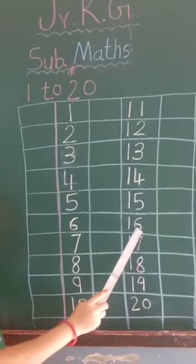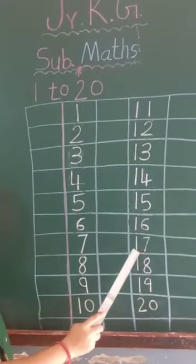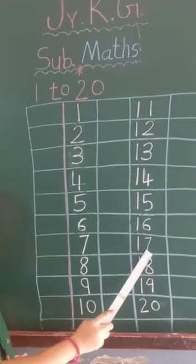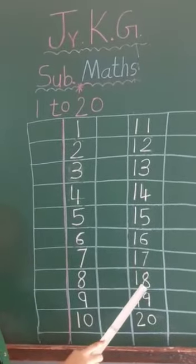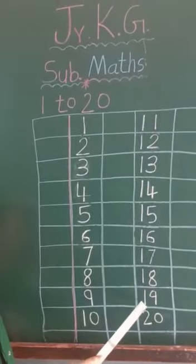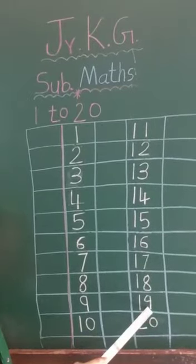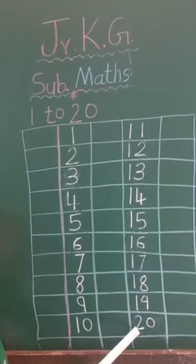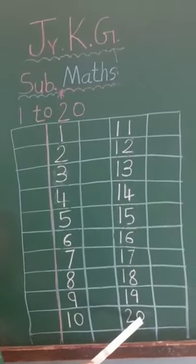1, 6, 16. One, six, 16. One, seven, 17. One, seven, 17. One, eight, 18. One, eight, 18. One, nine, 19. One, nine, 19. Two, zero, 20. Two, zero, 20.